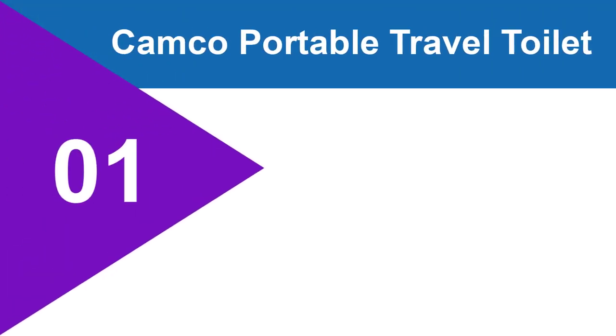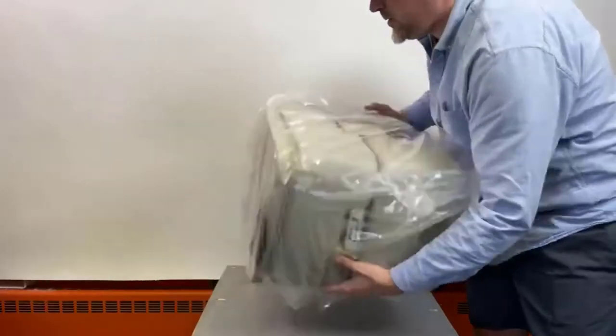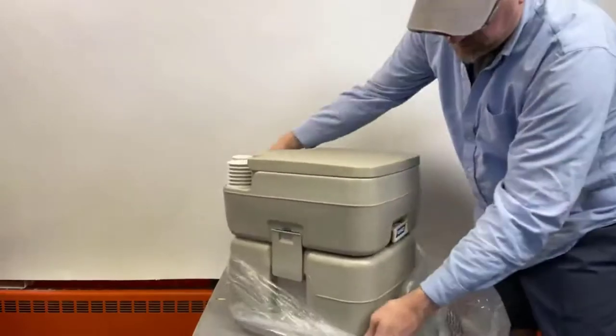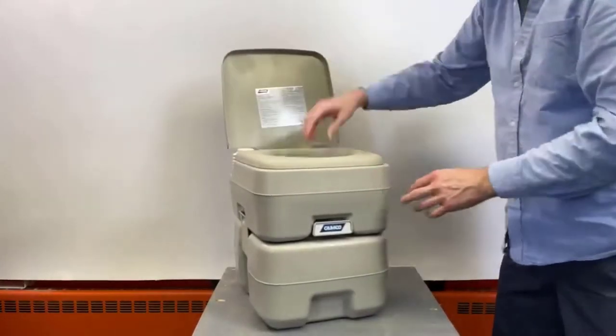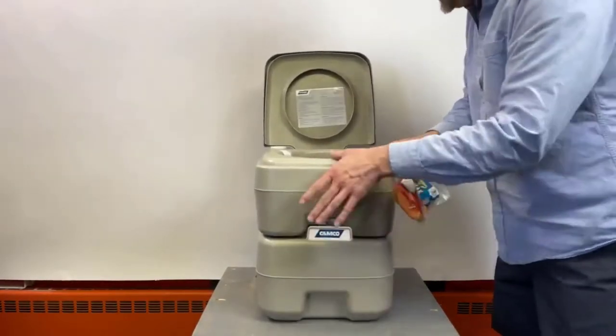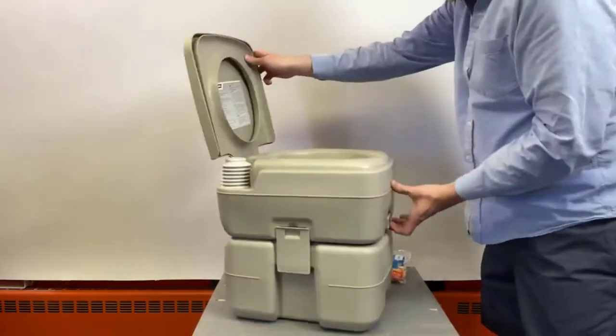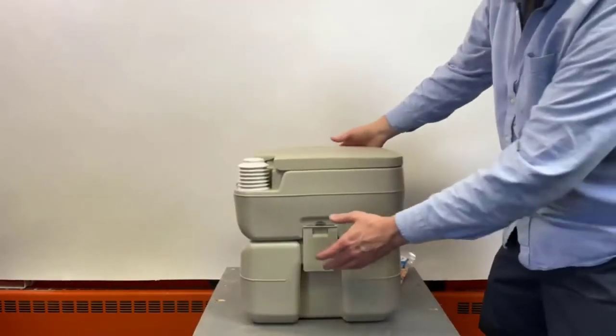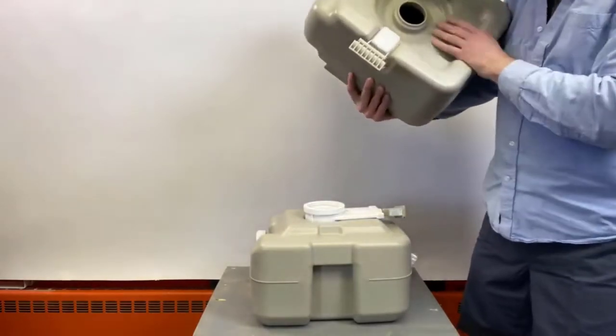At number one: Camco Portable Travel Toilet. Camco is a reputable brand in supplying marine products for years, and this model of portable marine toilet brings refreshing feelings. It is designed to be used in RVing, camping and boating. The waste tank has a 5.3 gallon waste capacity that will suffice for all day long maritime escapades. You don't need to check the tank if it's full from time to time.